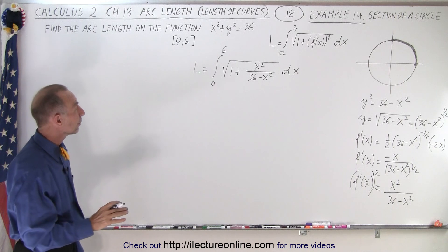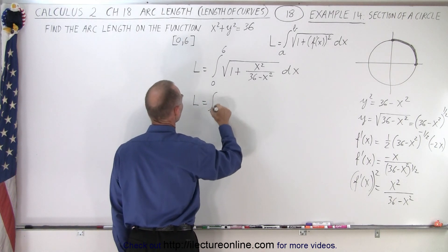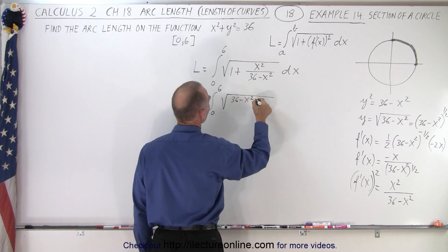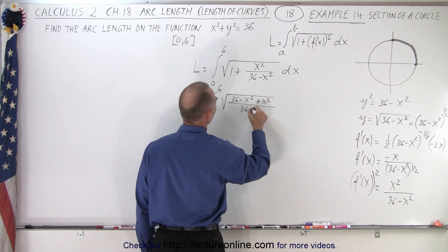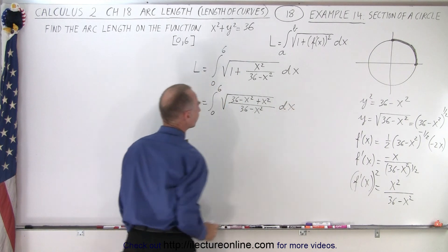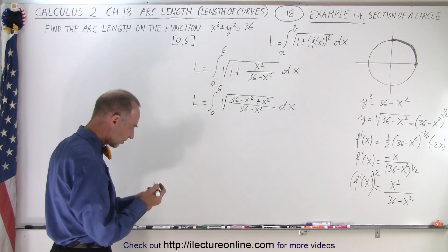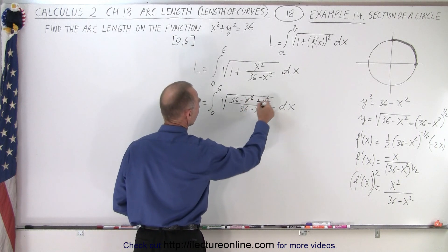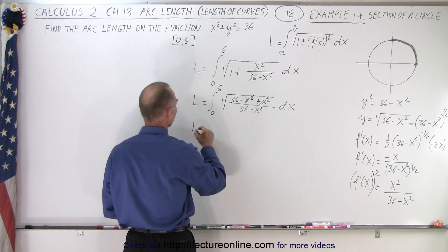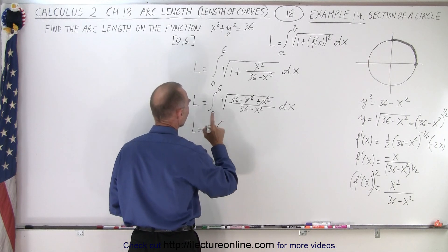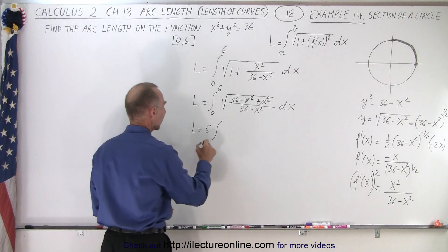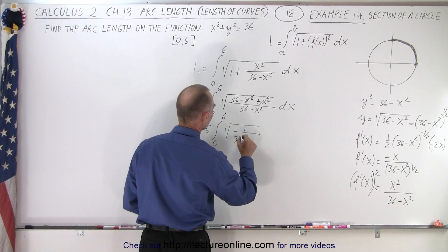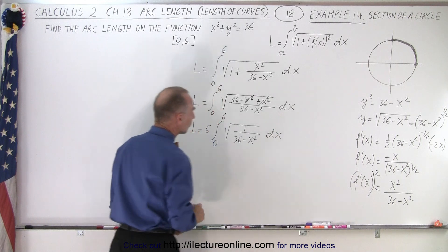We go ahead and put that over a common denominator. So L equals the integral from 0 to 6 of the square root of 36 minus x squared plus x squared, all divided by 36 minus x squared, dx. Notice that the x squared terms cancel out, and we can factor out the 36. So this becomes L equals 6 times the integral from 0 to 6 of the square root of 1 over 36 minus x squared, dx.